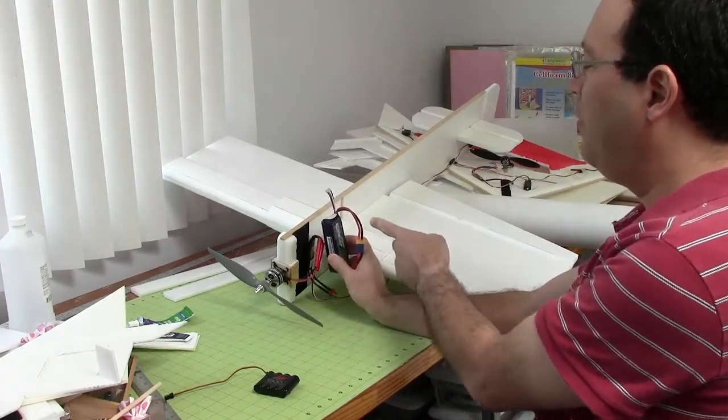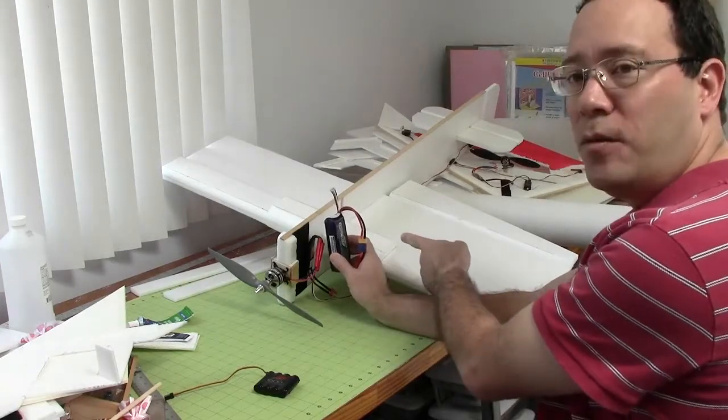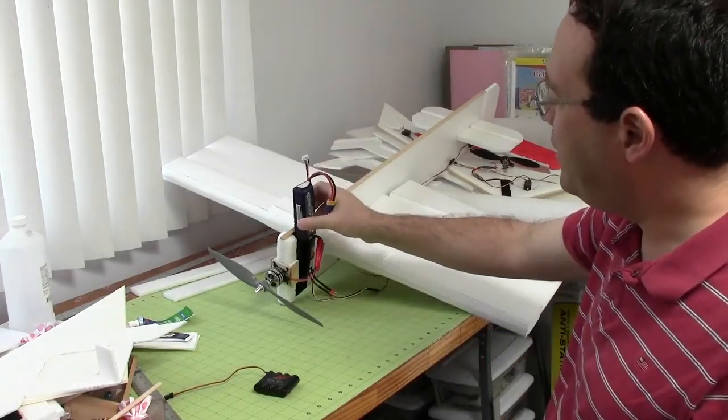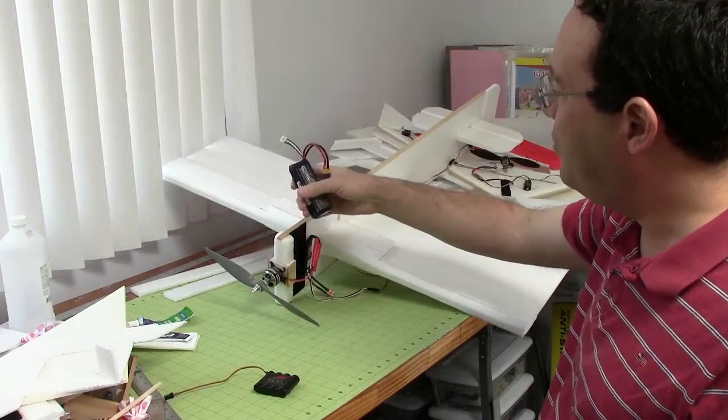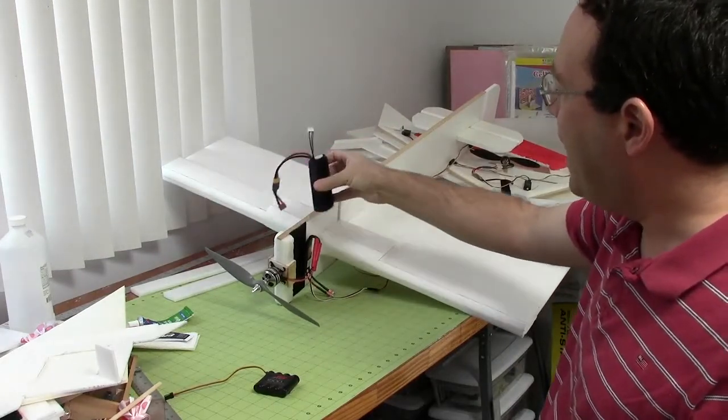So what I do with my battery in my computation is that I just assume that the battery was right in the middle of the range that it can go. In this case it's going to go between this front support and the leading edge of the wing.